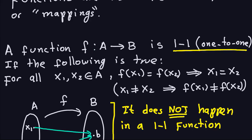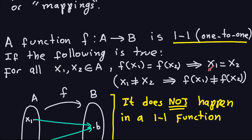We say that a function from A to B — where A are the inputs and B are the outputs, and F transforms elements of A into elements of B — is one-to-one if the following is true: every time you take two elements X1 and X2 in A and their images by F are equal, so F(X1) = F(X2), that implies the inputs must be the same. Another way to look at this is the contrapositive: if X1 ≠ X2, then the outputs can't be equal.